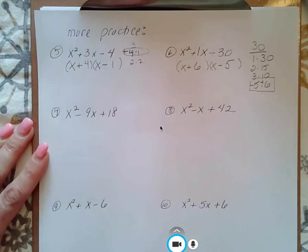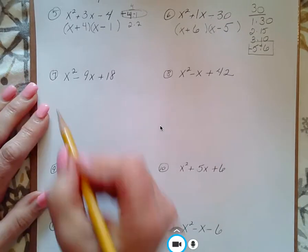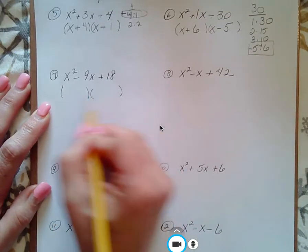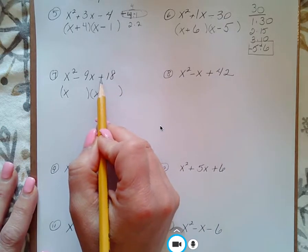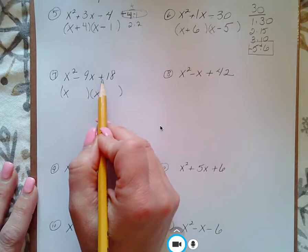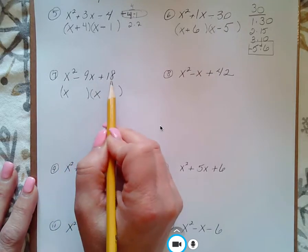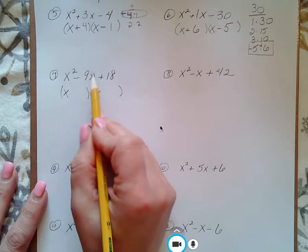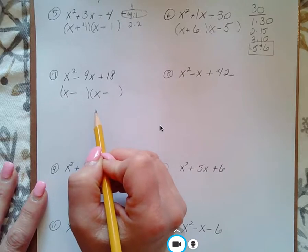Number 7. Two sets of parentheses, x in the beginning of each. We're multiplying to get a positive 18. Two ways to multiply to get a positive. You can either multiply a positive times a positive, or a negative times a negative. Now, since we're combining to get a negative 9, well, the only choice for us is a negative times a negative. Two of the same sign when you multiply to get a positive number.